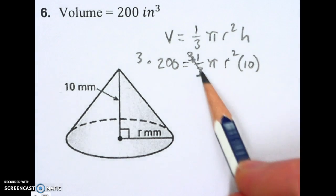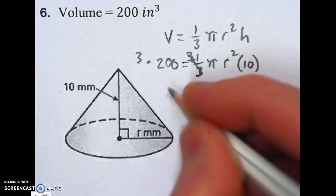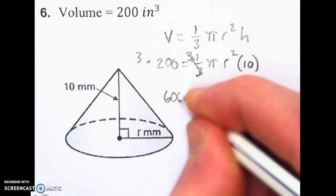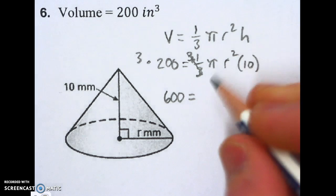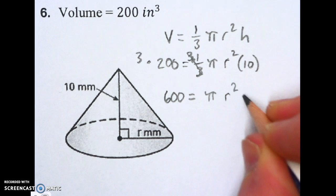That's going to cancel out the one-third there and the 3. And 3 times 200 is going to get me 600. And I still have left on this side pi, r squared, and 10.